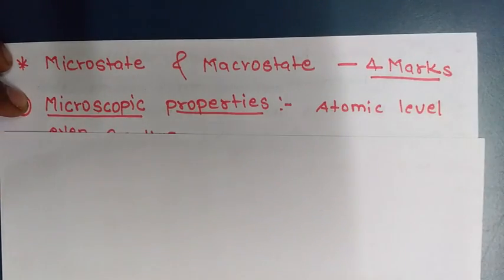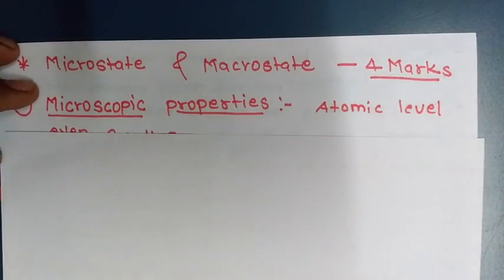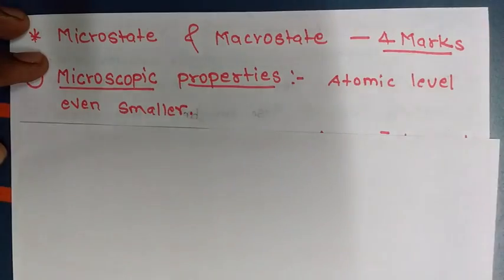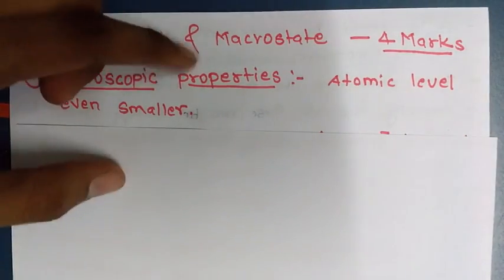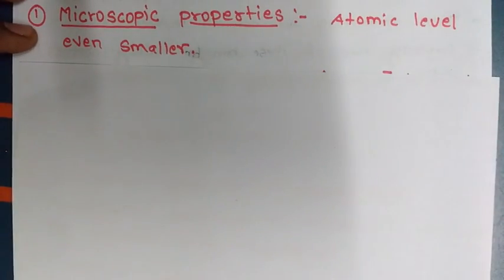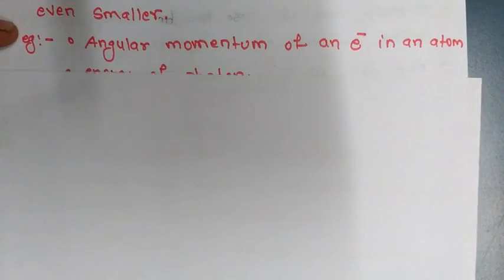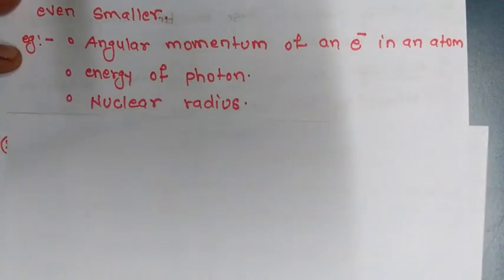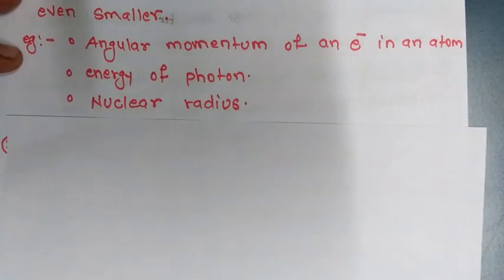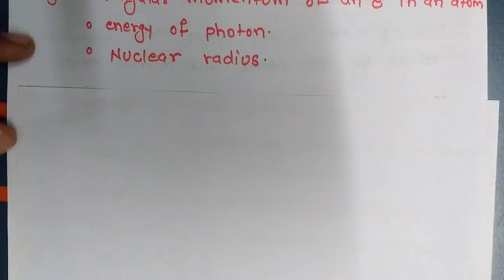Since we know a system consists of a number of particles, and when we talk about any system at the atomic level — even smaller than that — whatever the parameters or properties introduced are called the microscopic parameters. For example, the angular momentum of an electron in an atom, energy of photons, and nuclear radius — these all are the microscopic parameters.